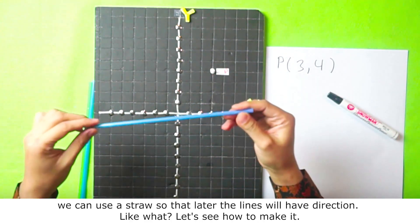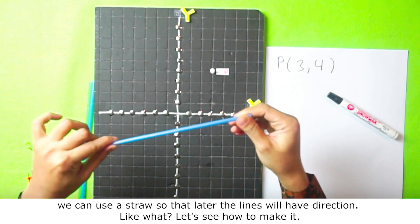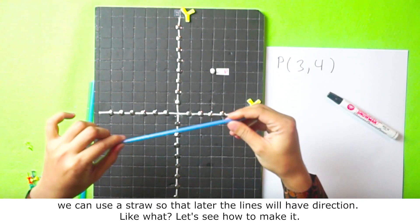We can use a straw so that later the lines will have directions. Let's see how to make it.